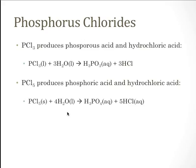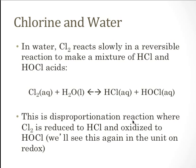Phosphorus chlorides react with water to form phosphorous acid and hydrochloric acid. Phosphorus trichloride reacts with water to form phosphorous acid and hydrochloric acid. Phosphorus pentachloride with water forms phosphoric acid and hydrochloric acid. When chlorine is added to water, it reacts slowly in a reversible reaction to make a mixture of hydrochloric acid and HOCl. This is called a disproportionation reaction where chlorine is both reduced to hydrochloric acid and oxidized to HOCl, and you'll see this again in the unit on redox.